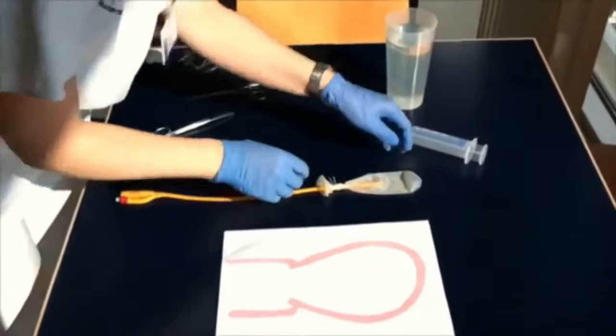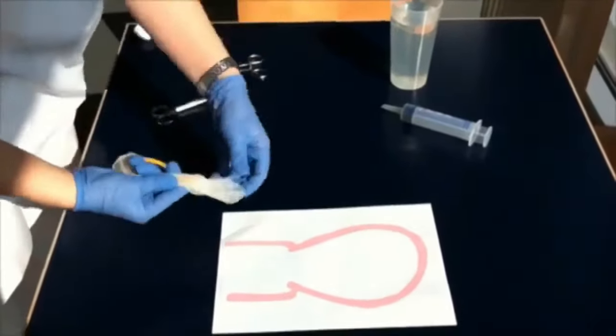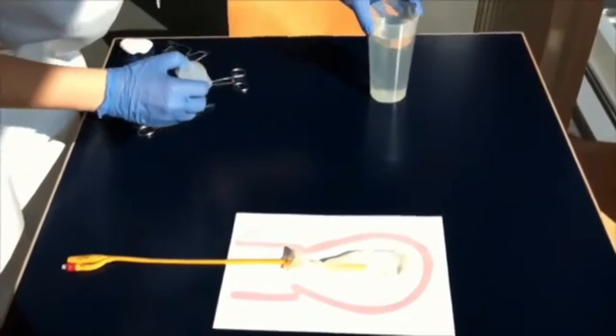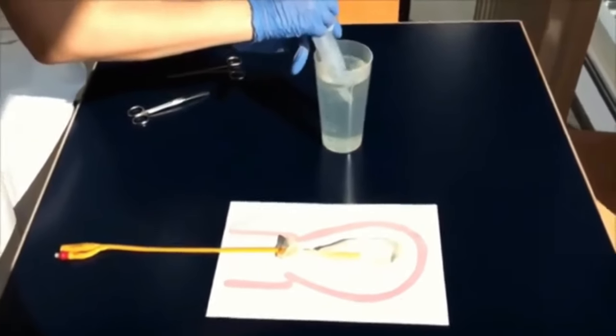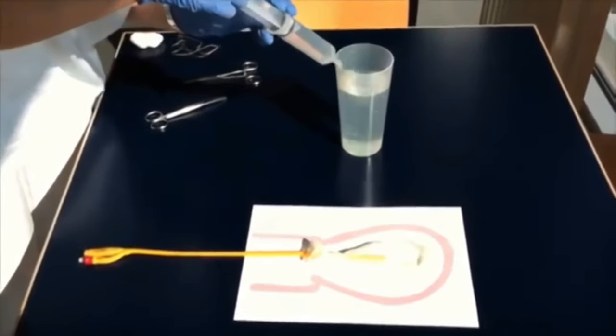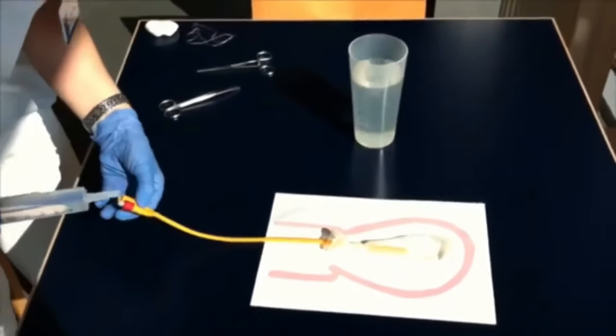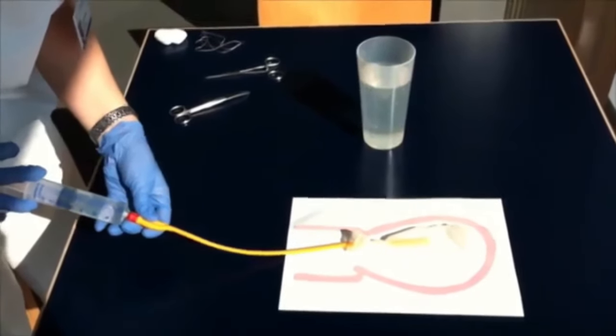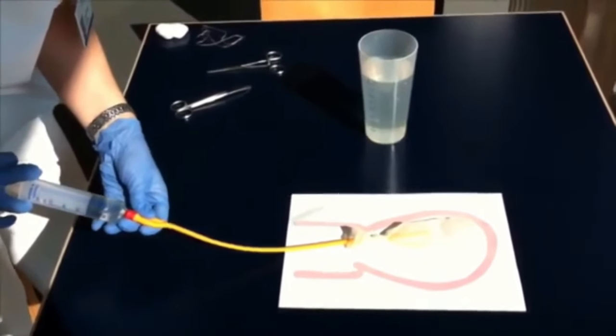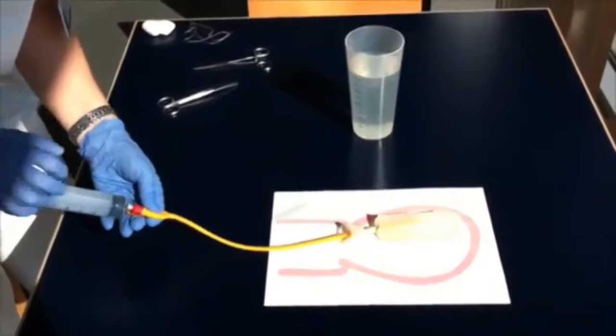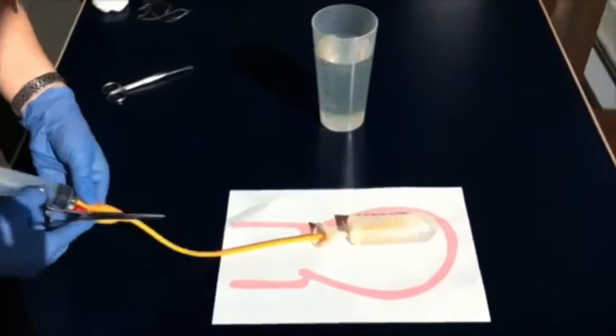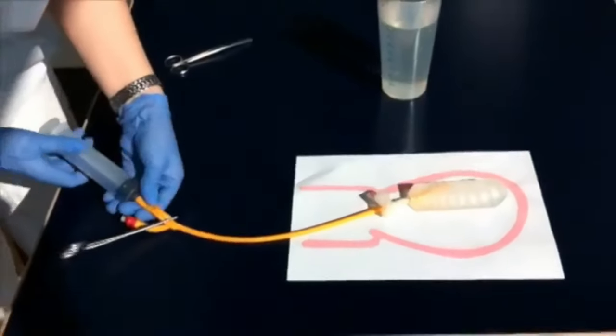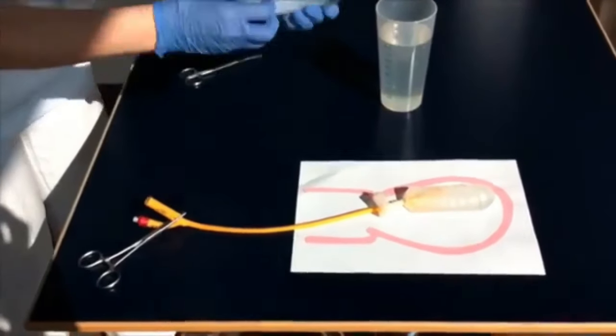Now he has inserted the balloon tamponade into the uterus, which is very easily seen by all of you. Now he will pick up the Foley's catheter, and from the end where we inflate the balloon, he is going to push 50 ml of ringer lactate. Just to keep the inflated fluid inside the uterus from coming out, he has clamped the other part of the Foley's catheter so that the ringer lactate does not flow out.